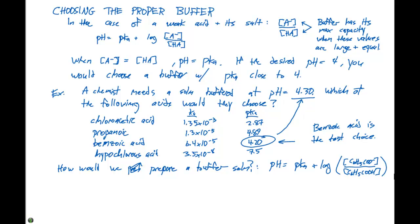In this particular example, our pH is 4.30. That's going to equal the pKa, which is 4.20, plus the log of the concentration of C6H5COO- divided by the concentration of C6H5COOH.